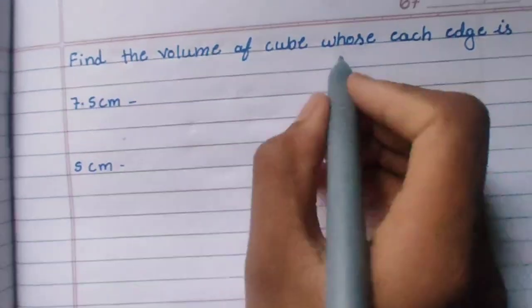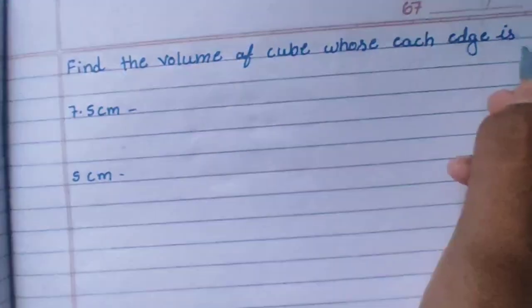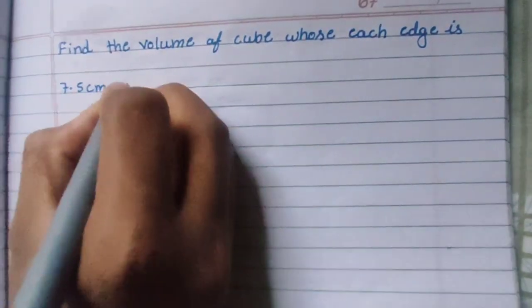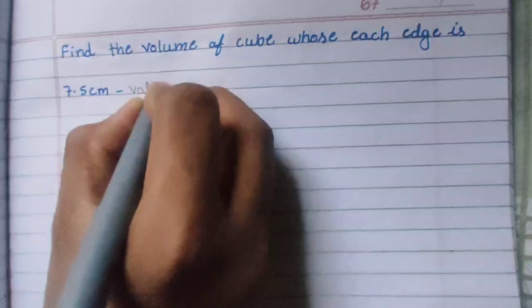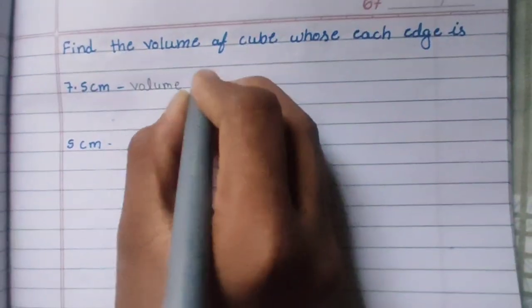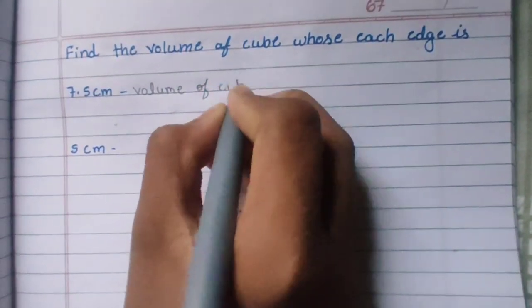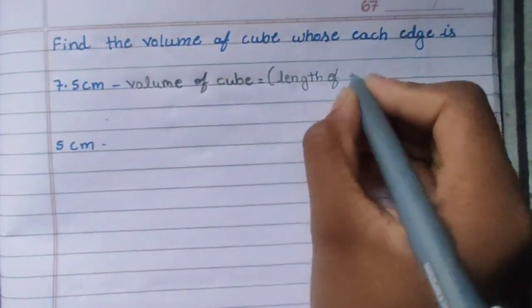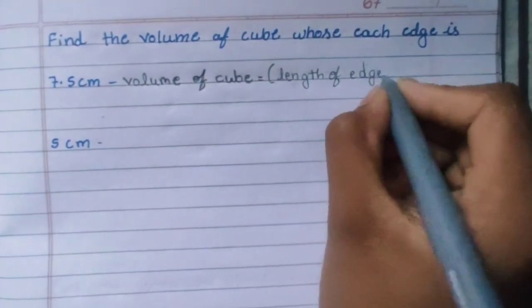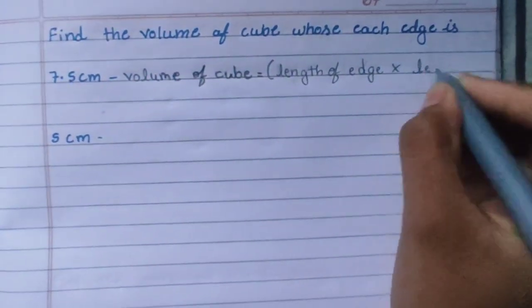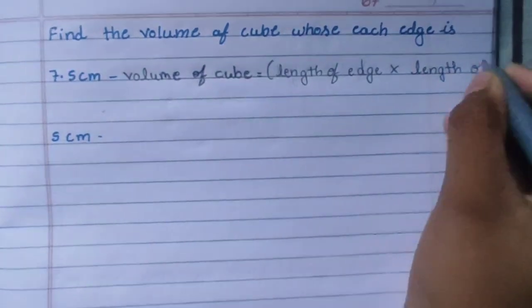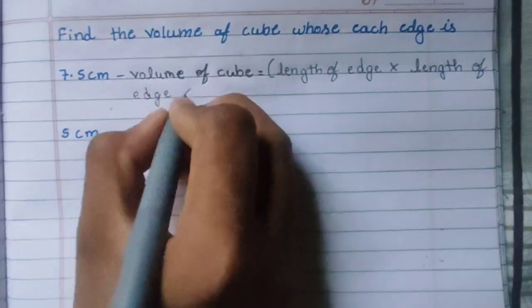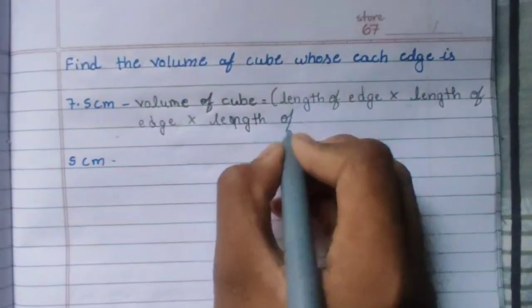Find the value of a cube whose each edge is 7.5 cm. First, we write the formula. Volume of cube equals length of edge, multiplied by length of edge, multiplied by length of edge.